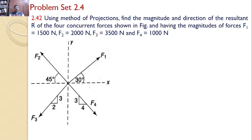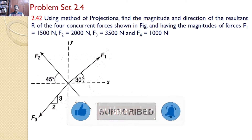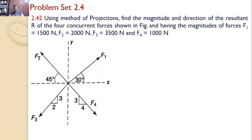Using the method of projections, find the magnitude and direction of the resultant R of the four concurrent forces shown in the figure, having the magnitudes: F1 = 1500 N, F2 = 2000 N, F3 = 3500 N, and F4 = 1000 N. That means there are four forces, and our interest is to find the resultant of all these four forces.